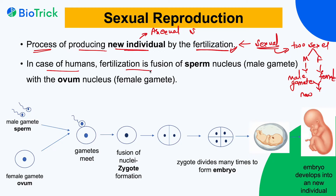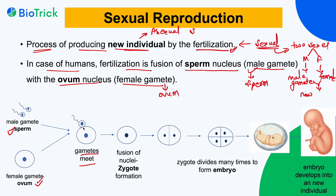In the case of humans, fertilization is the fusion of the sperm nucleus — the male gamete — with the ovum nucleus — the female gamete. The male gamete is sperm and the female gamete is ovum. When they fuse, they form a zygote, and this zygote divides many times to form an embryo, which further develops into a new individual. For now, understand that the male gamete is sperm and the female gamete is ovum.